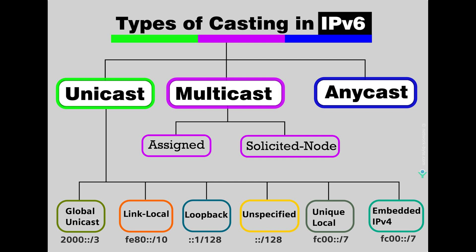Now let's talk about link-local under unicast for IPv6, which is covered in the Network+ exam. Link-local addresses have a prefix of FE80. IPv6 link-local addresses are used by devices for communicating with other nodes on the same link. They have a smaller scope and can only travel within the network segment a host is connected to. Routers will not forward packets destined to a link-local address to other links.